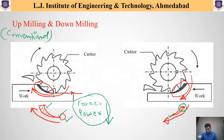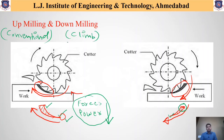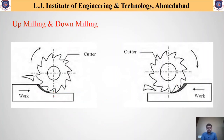Similarly, in the case of down milling, forces and power required are maximum at the beginning, and due to this, another name for down milling is climb milling. So up milling is also known as conventional milling, whereas down milling is also known as climb milling. These are the basic differences between up milling and down milling. Now let us look at other parameters which differentiate the two processes.